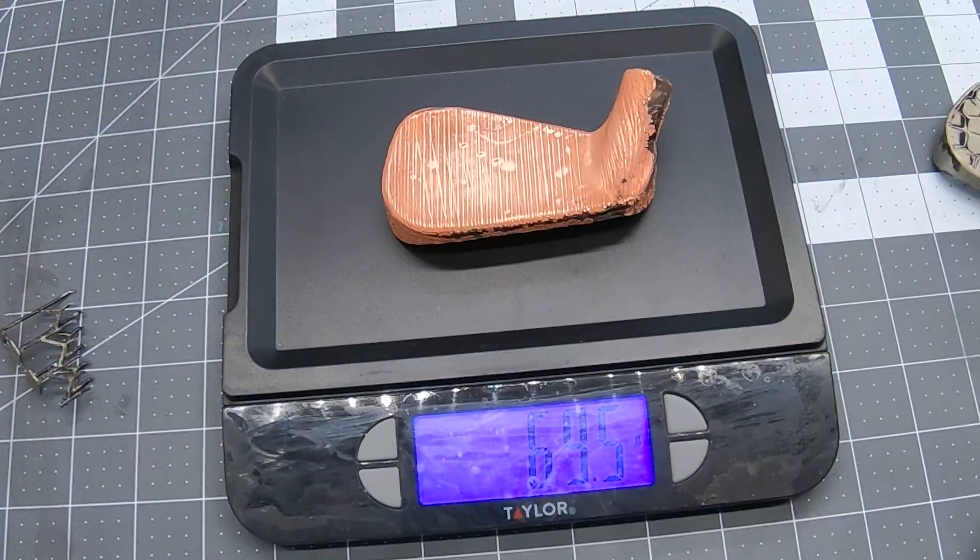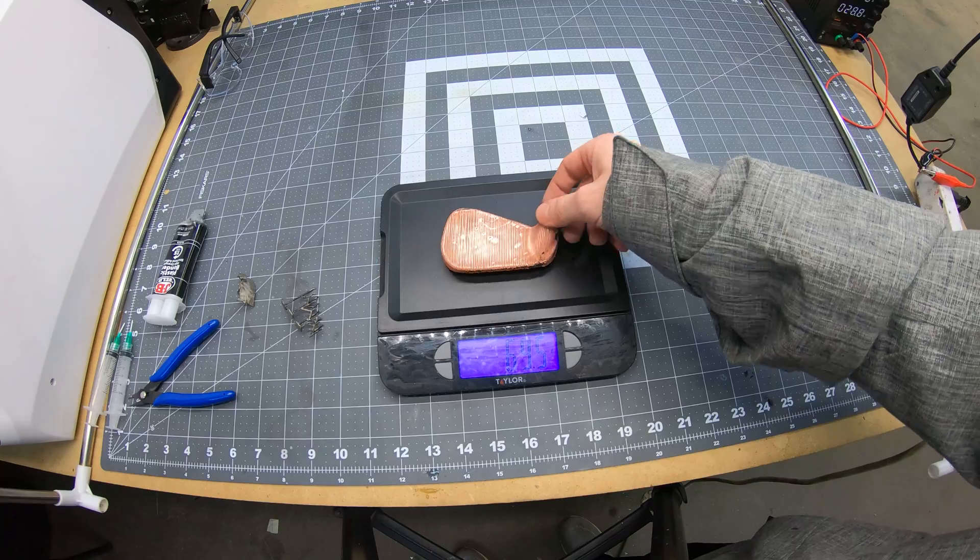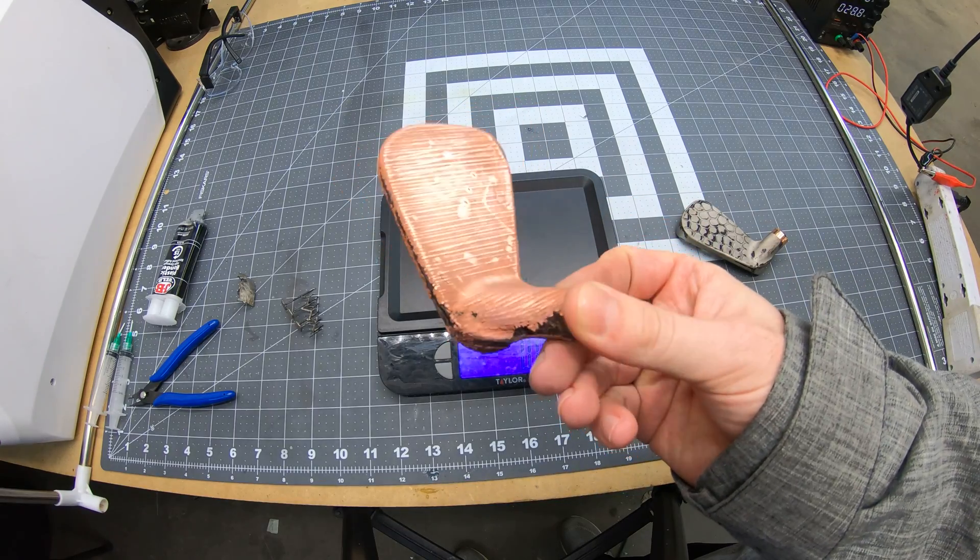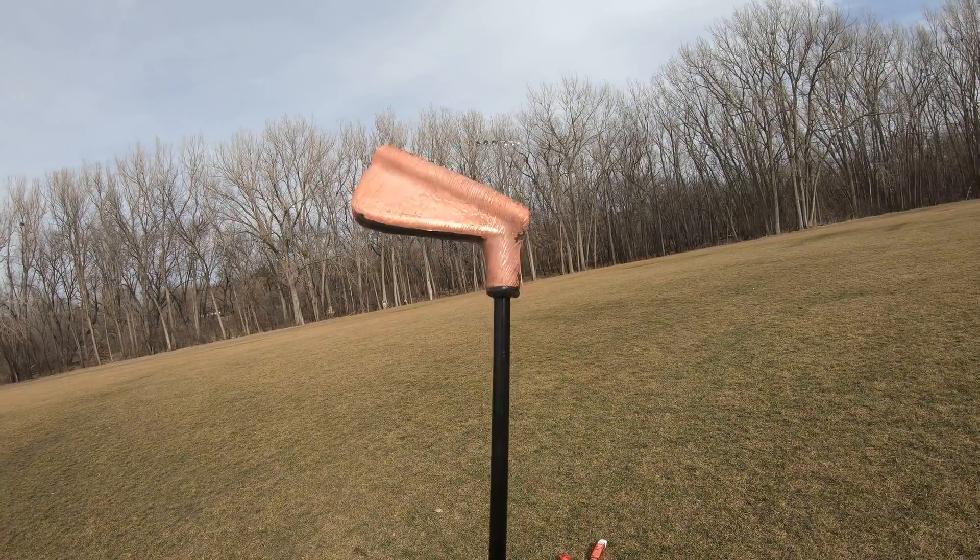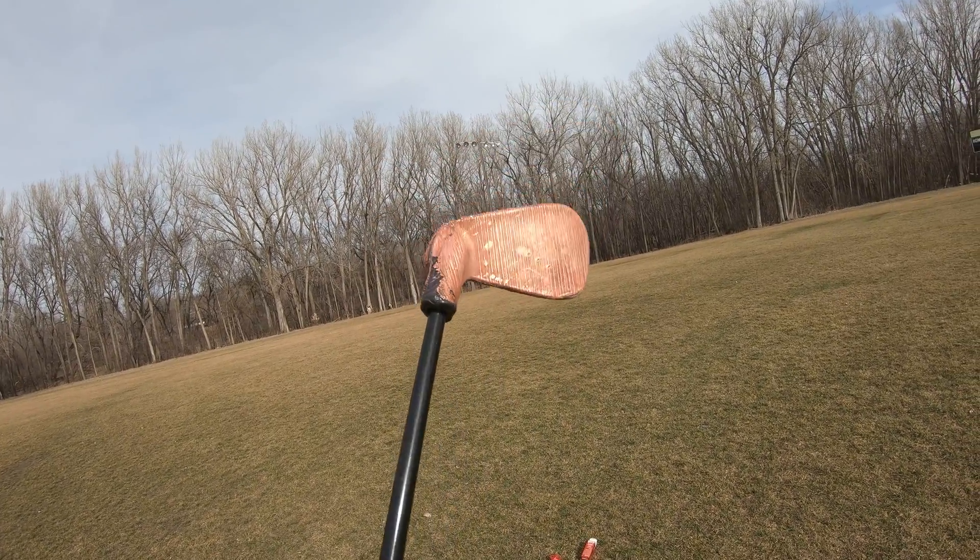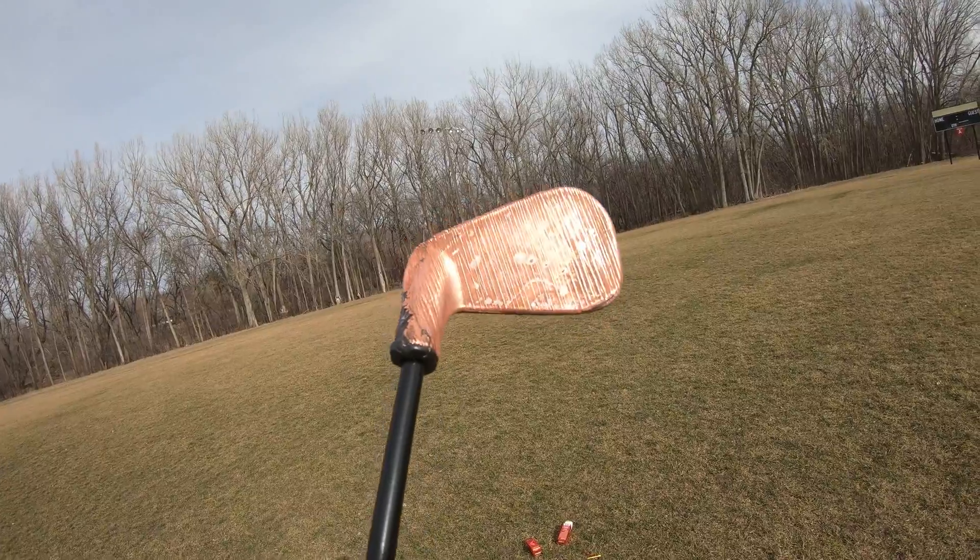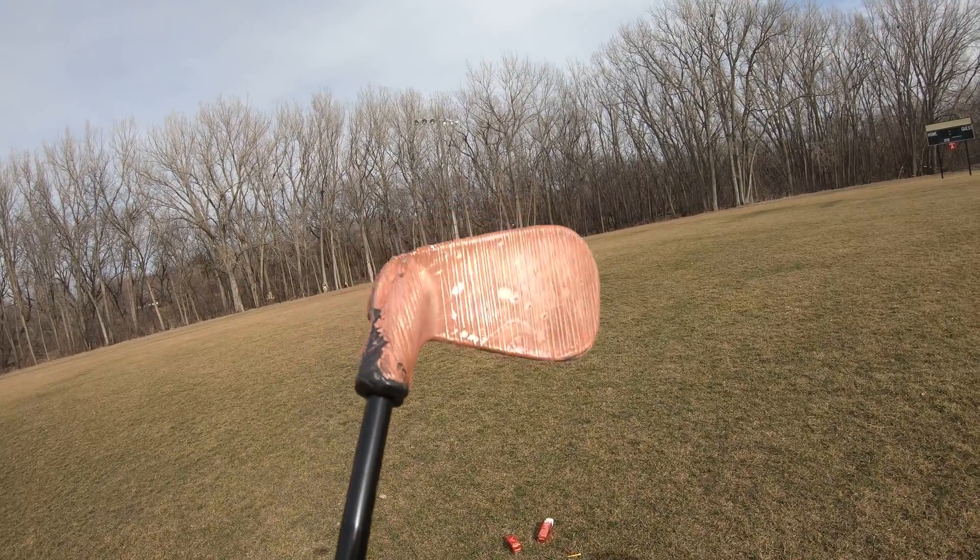The copper wedge weighed roughly eight grams more. My hope was that eight grams would be enough to prevent this thing from exploding. The next day I took the club out to a grassier area with the goal of getting at least one good shot before it inevitably exploded.